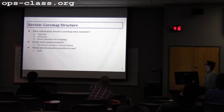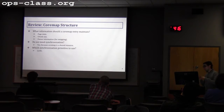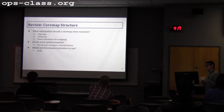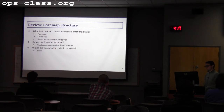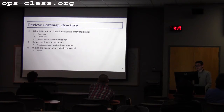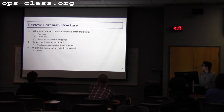What information do we need to keep in the core map? You need to keep the page state. For now, you only need the states of free or used. Later, when we go into swapping, you need to mark kernel pages as fixed — they should not be swapped out. Free pages need states like dirty or clean. But up until the second checkpoint, you can use just free or used, since there is no swapping. You do need synchronization for your core map.